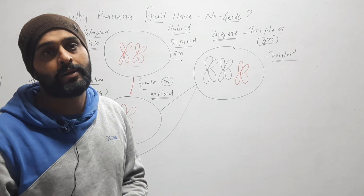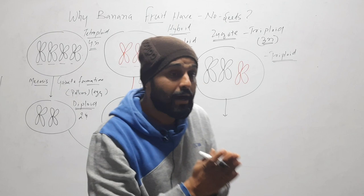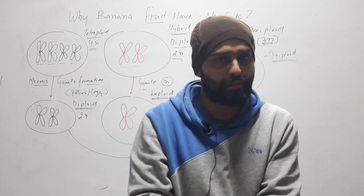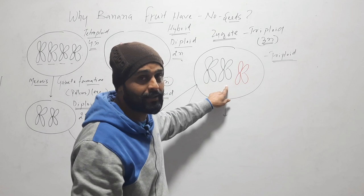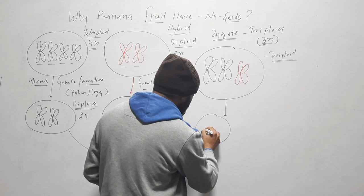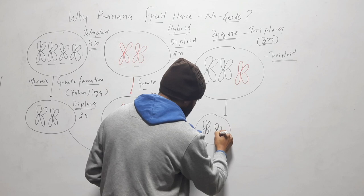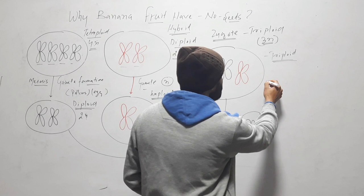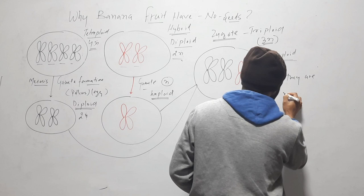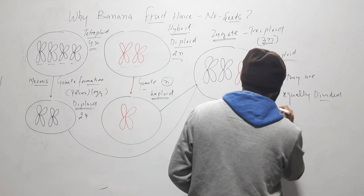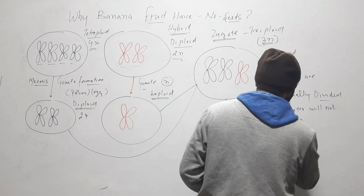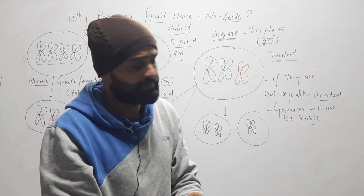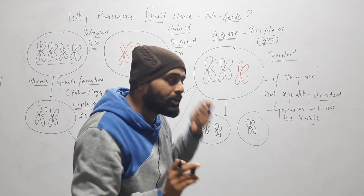During meiosis, chromosomes must divide into an exact half number. But here we have 3 chromosomes, so the plant cannot divide them equally in half. One gamete might get 2 chromosomes and another might get 1. Since they are not equally divided, the gametes will not be viable.